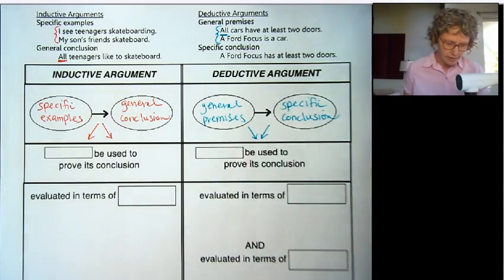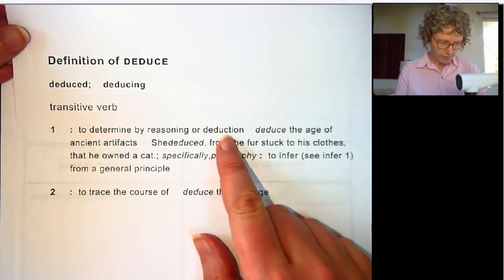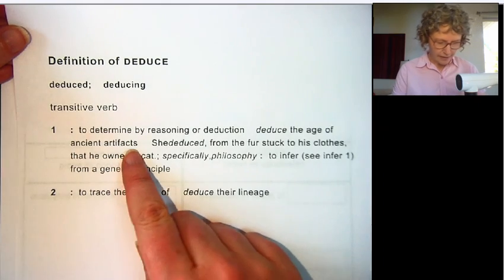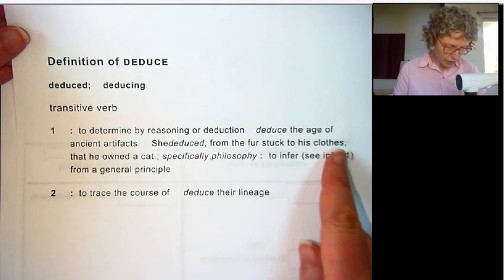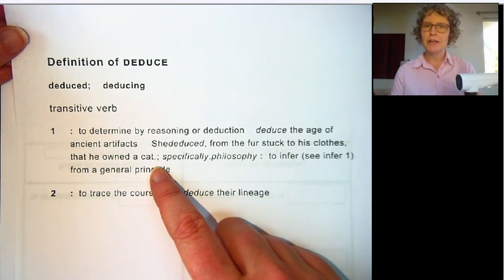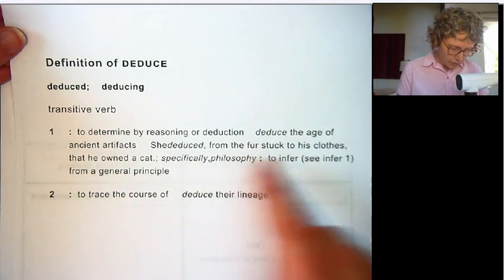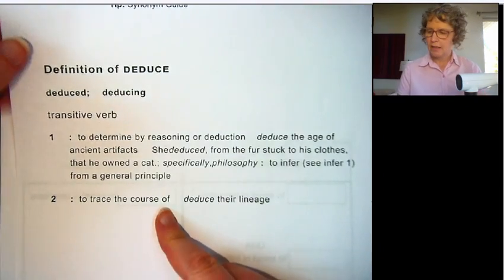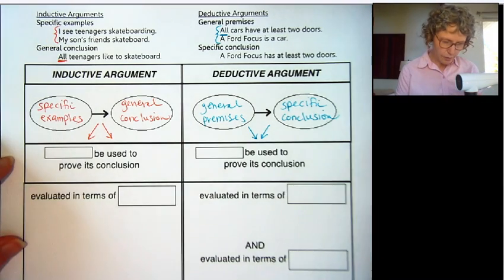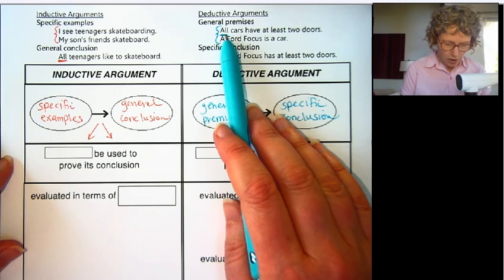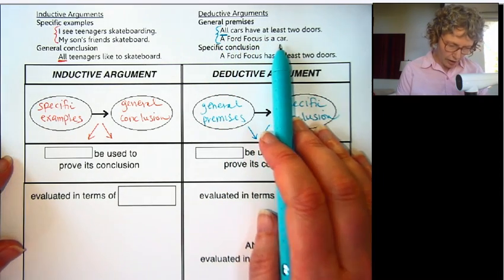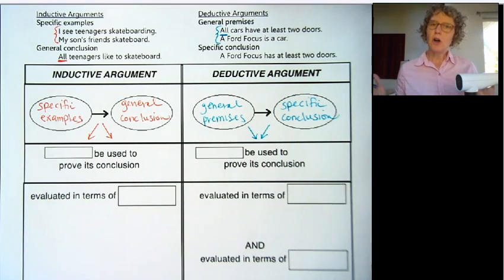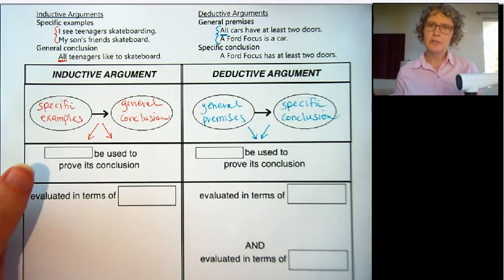Let's look at the verb deduce. To deduce is to determine by reasoning or deduction — to deduce the age of ancient artifacts, for example. Or she deduced from the fur stuck to his clothes that he owned a cat. This makes me think of Sherlock Holmes making deductions based on observations. To infer from a general principle, or to trace the course of. So deduce is really following the line of reasoning from logical premises to a conclusion.